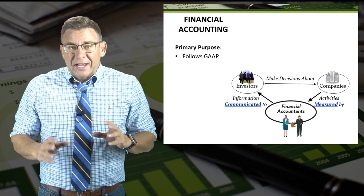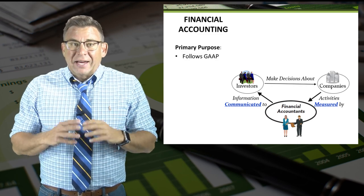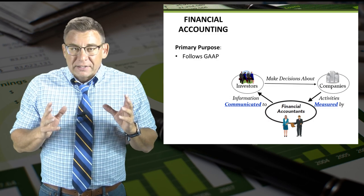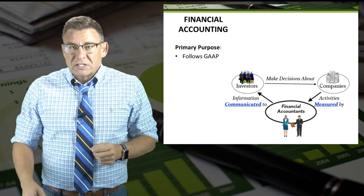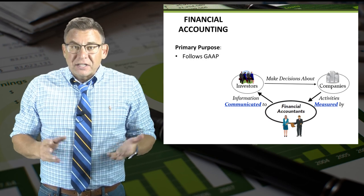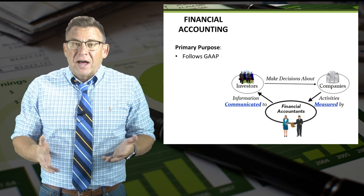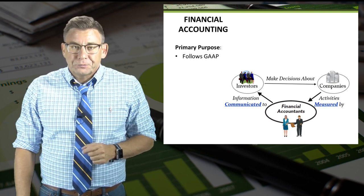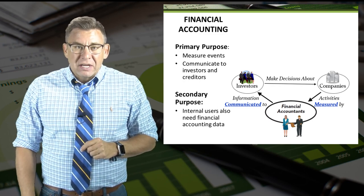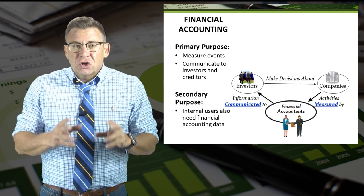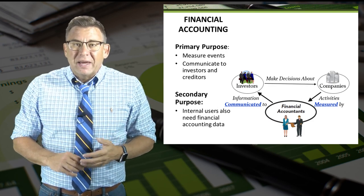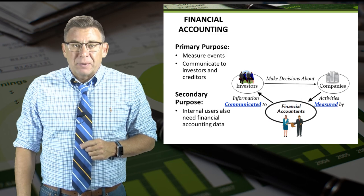Because financial data is communicated externally and used by investors and creditors to make decisions and comparisons about companies, the data must be standardized. Thus, financial accounting must follow GAAP. Financial accounting also has a secondary purpose, and that is internal decision makers, like managers and owners, use it to make internal decisions about their companies.